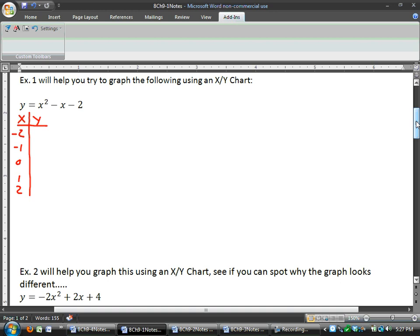Remember, plug in negative 2 for x. So y equals negative 2 squared minus negative 2. Don't forget that's minus a negative. So now we're just going to simplify. Negative 2 squared is 4. Minus a negative becomes plus 2 minus 2. 4 plus 2 is 6 minus 2. And so y is equal to 4.